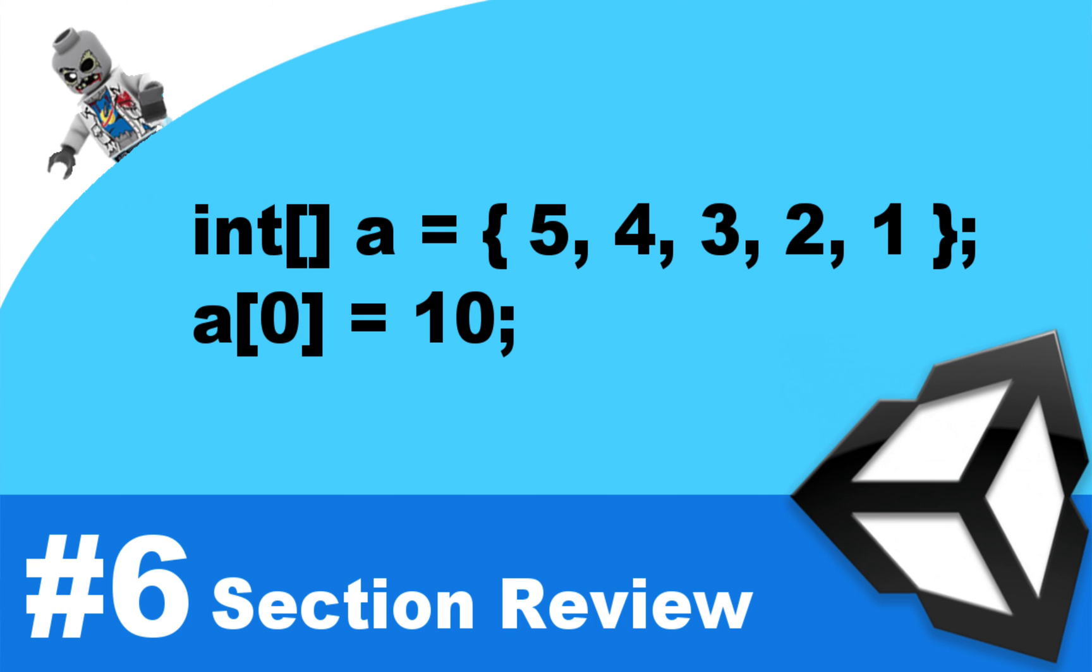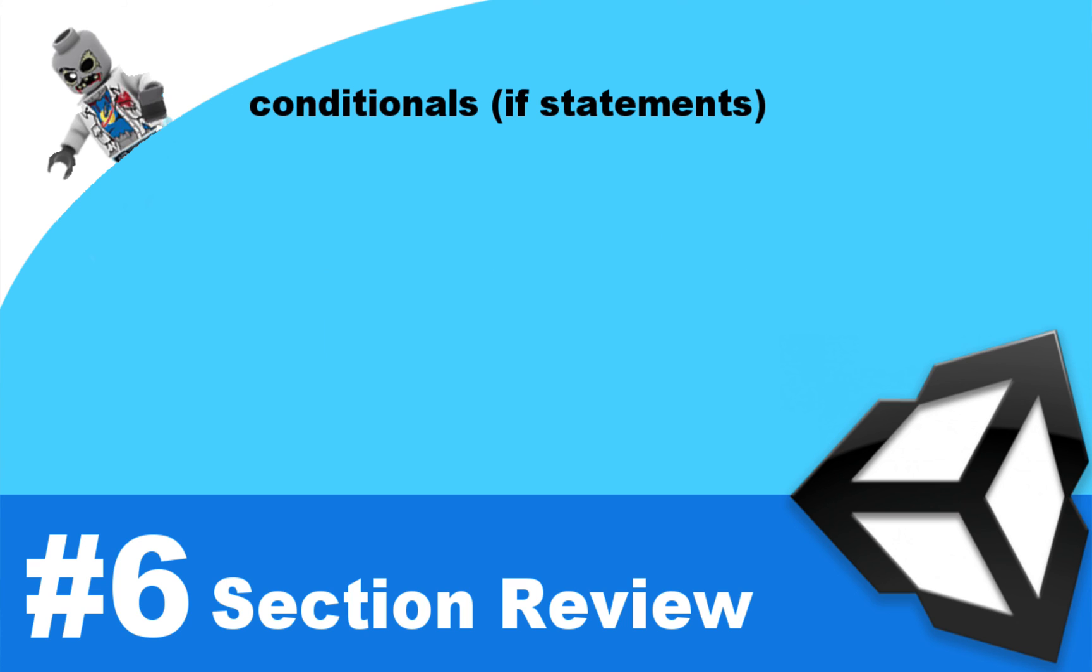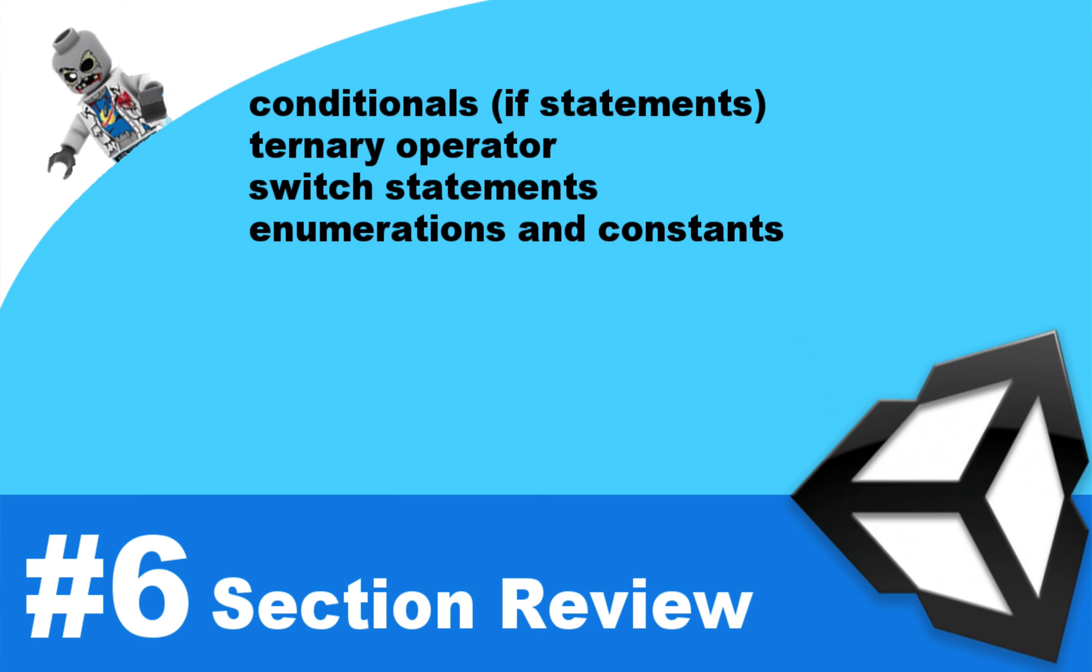First, we're going to be introducing you to the idea of conditionals. So far, we have all these different variables, but now we want to make choices based on the values of those variables. Next, I'm going to introduce you to a new operator. It's very much like conditionals. It's called the ternary operator, and it's really useful. Then you'll be introduced to things called switch statements. And switch statements is, in a way, another type of conditional, another type of if statement. And then I'll introduce you to enumerations and constants. I could have introduced you to enumerations and constants in the previous section, but once you see how they work in context of control flow, you'll understand why they're so important.